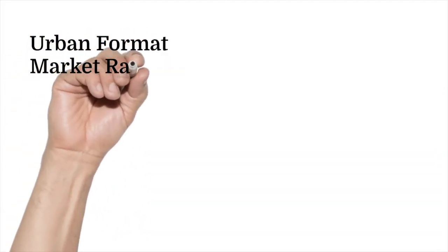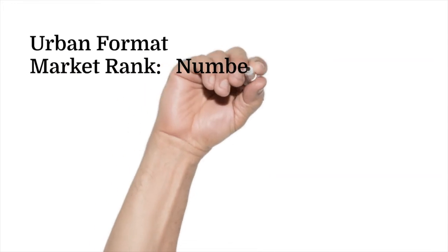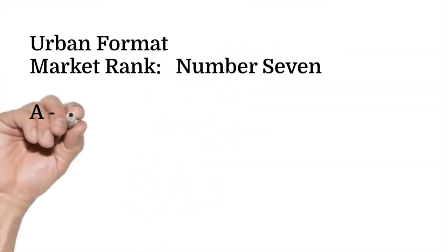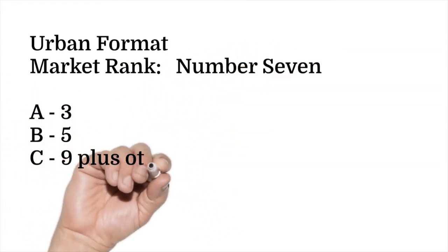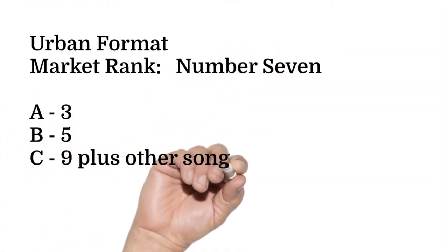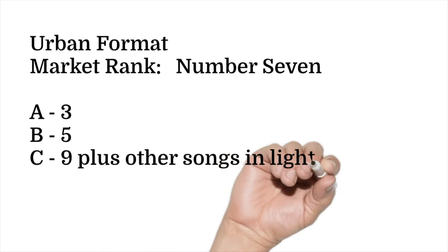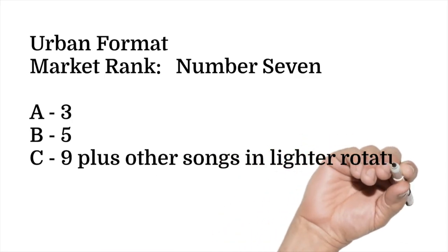Now let's go to an urban station — major market. They have three A's, five B's, and nine C's. Roughly they're playing 23 overall current songs, of which just nine are getting played over and over again.